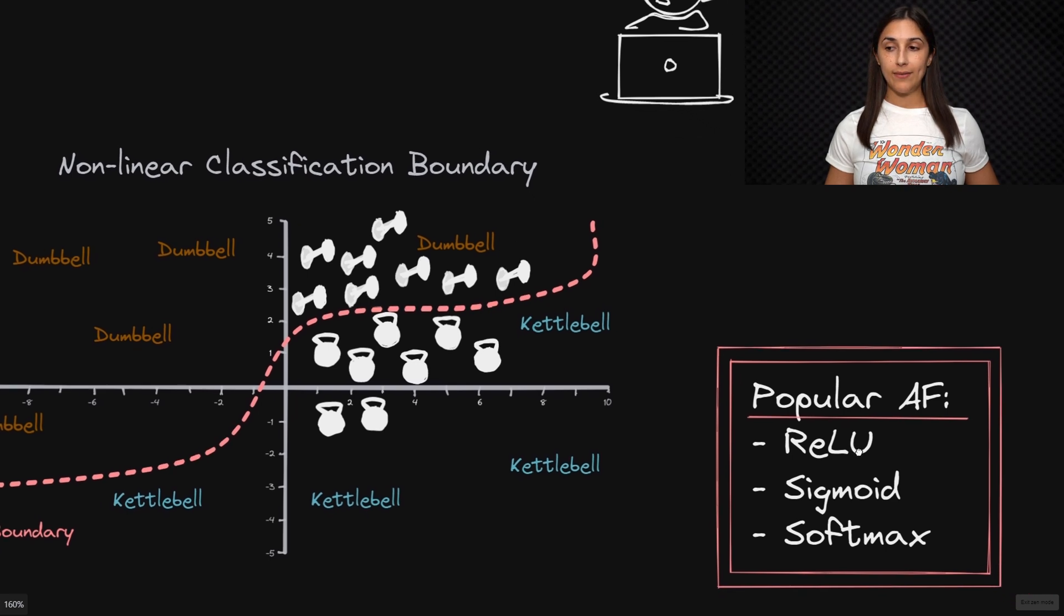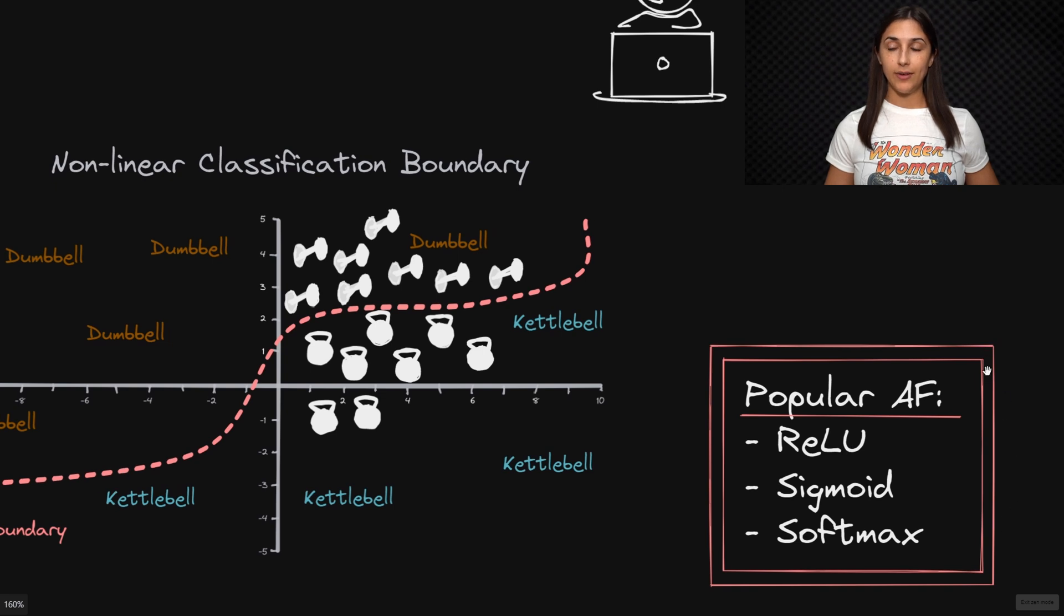Here we have outlined some of the popular activation functions. So the popular AF means popular activation functions. But some popular activation functions are ReLU, which we exemplified earlier with an earlier example, we also have sigmoid and softmax. And we will outline these activation functions in later lessons in more detail.